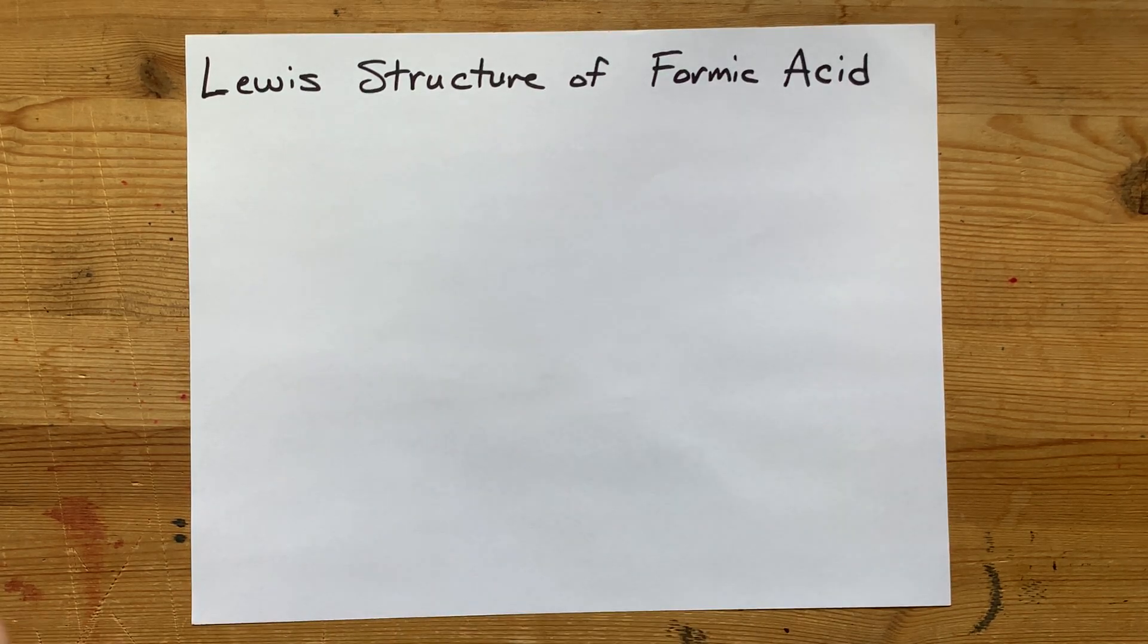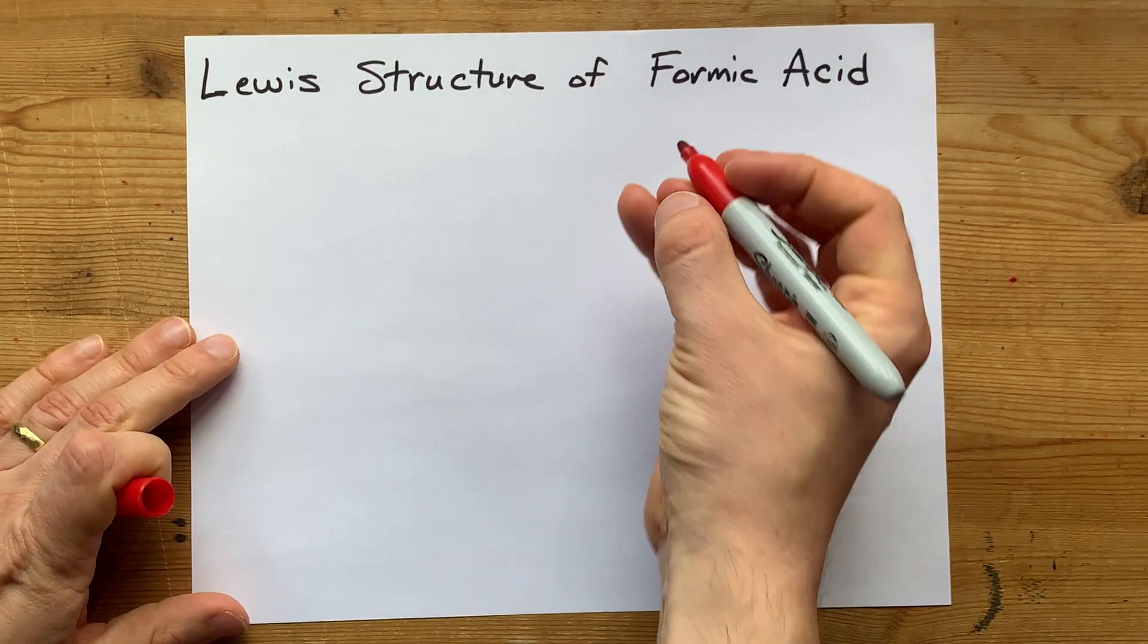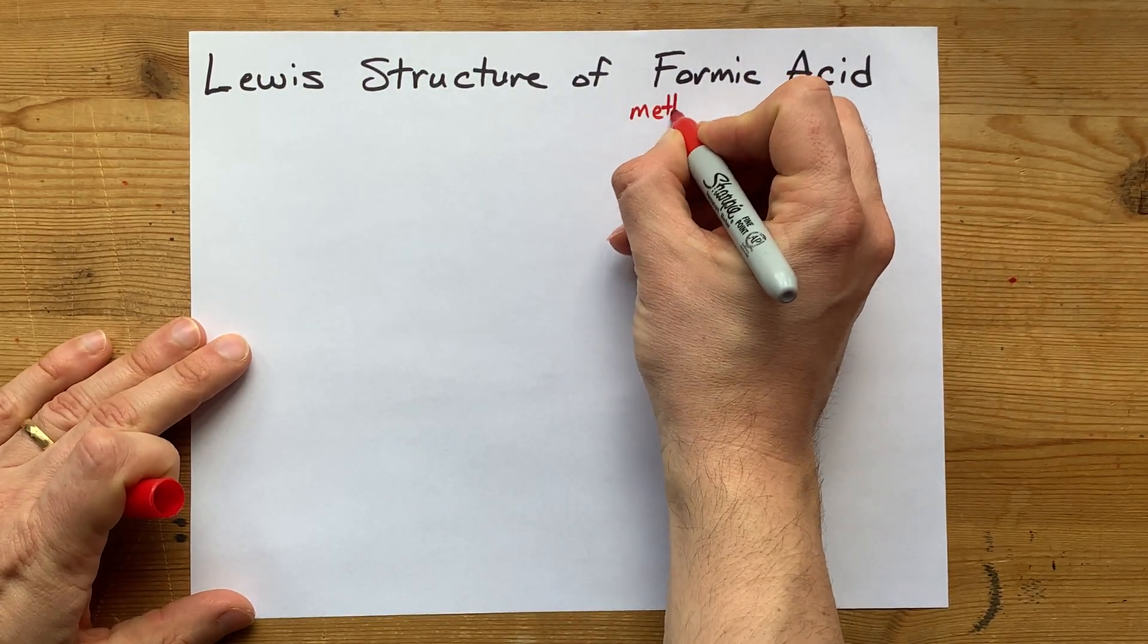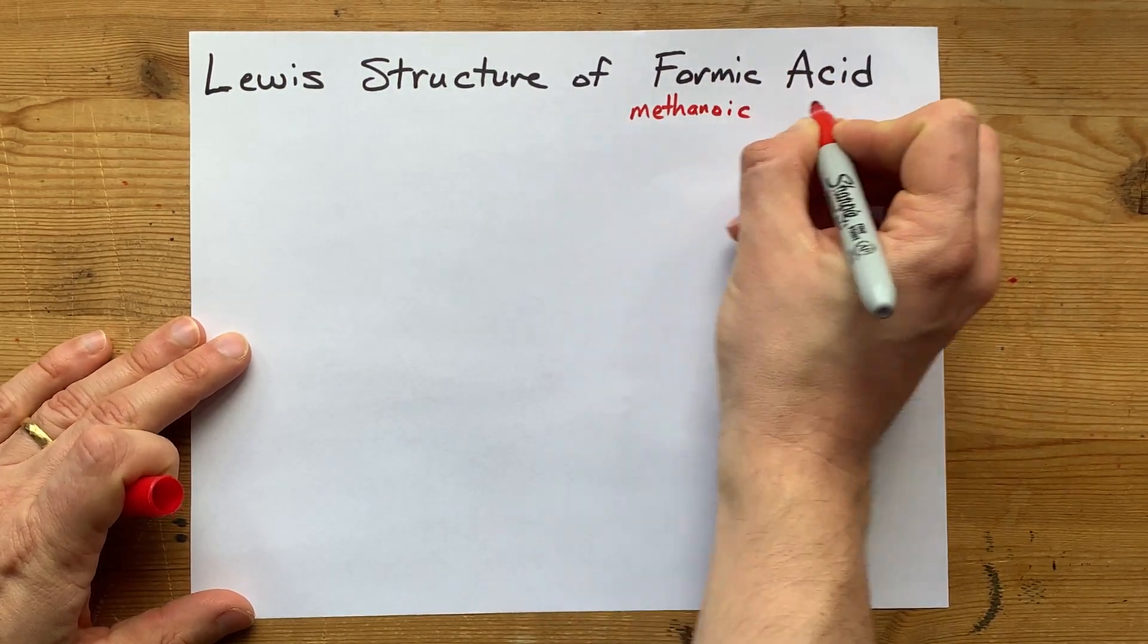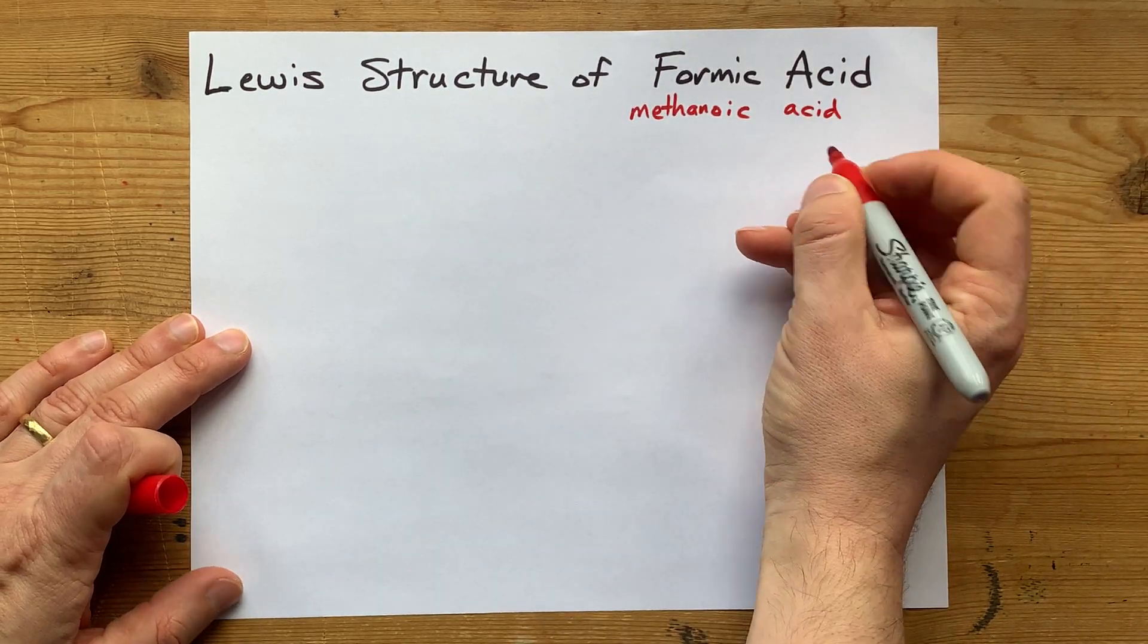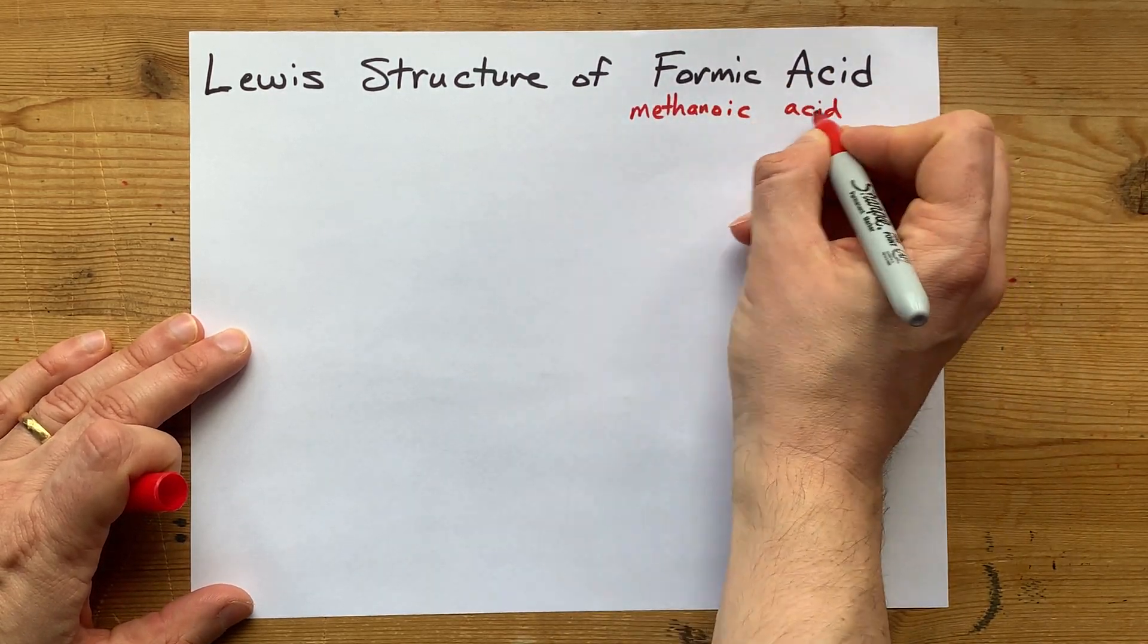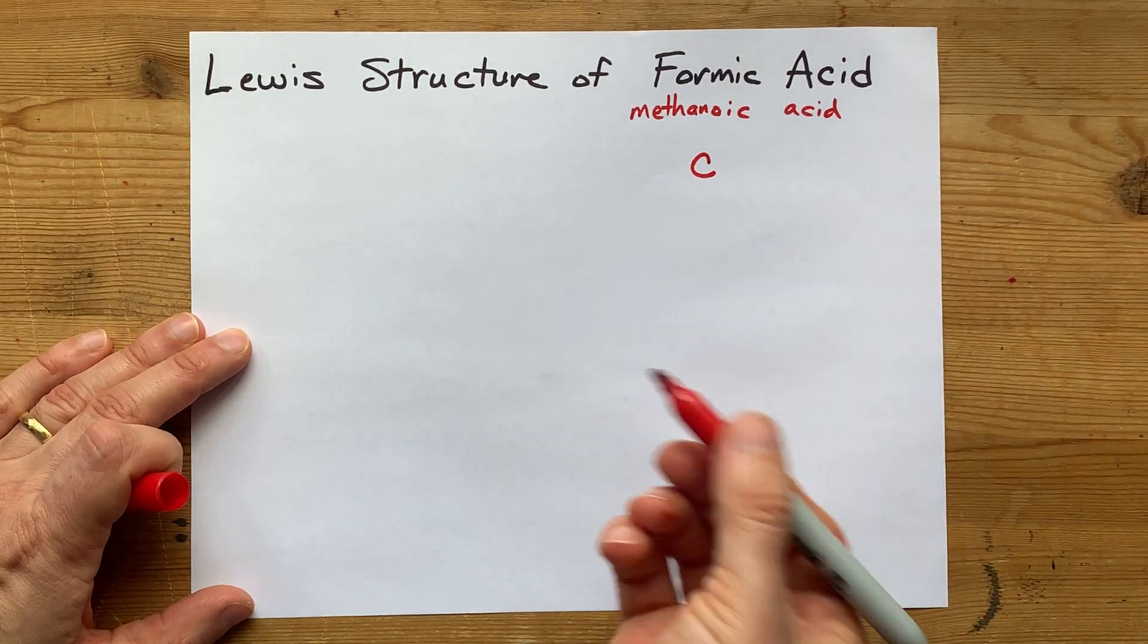Let's draw the Lewis structure of formic acid, but you have to kind of know what formic acid is before you even begin this. The official name for formic acid is methanoic acid, which means it's a carboxylic acid that only has a single carbon to the chain.